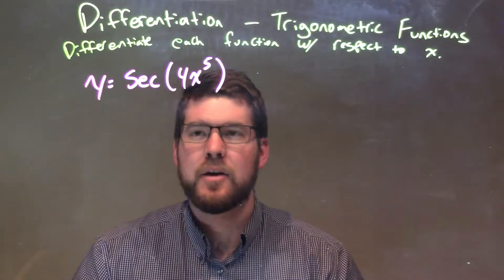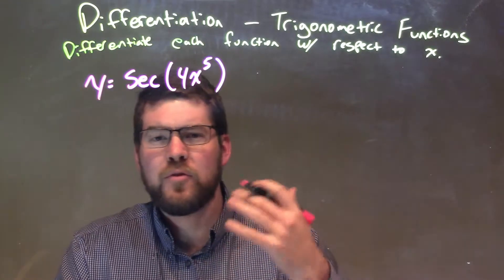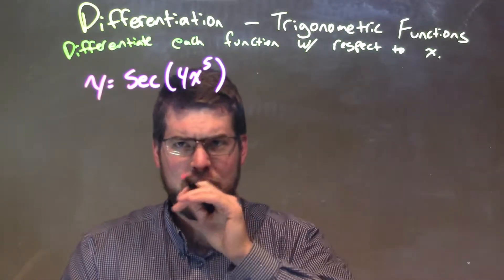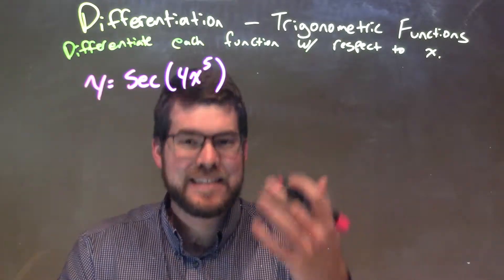Well, the first thing I'm going to look at here is, okay, secant. What is the derivative of secant? And that's going to be secant x tangent x. So the derivative of secant x is secant x tangent x.